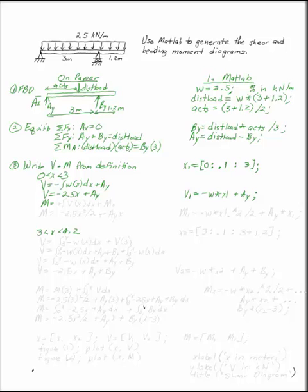Now my moment on this first integral is the positive integral of v dx plus whatever moment I had at the beginning. I don't have a moment at the beginning. So all I'm going to get is minus 2.5x squared over 2 plus ay x.